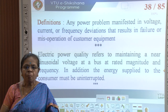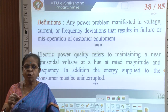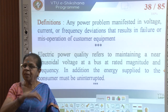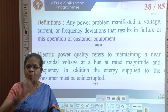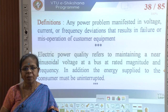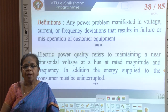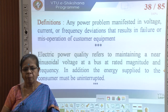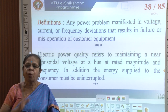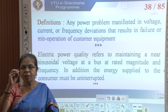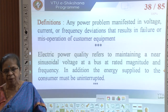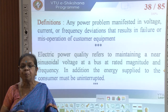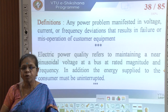Failure means the equipment fails to operate; mal-operation means it does not operate the way it is supposed to. Another definition: electrical power quality refers to maintaining a near-sinusoidal voltage at rated magnitude and frequency at every bus — 132 kV bus at 132 kV, 11 kV bus at 11 kV, 230 V at 50 Hz — and in addition the energy supply to the customer must be uninterrupted and reliable.